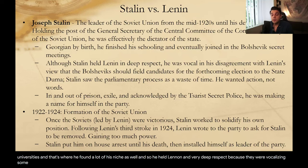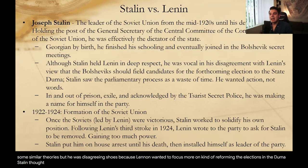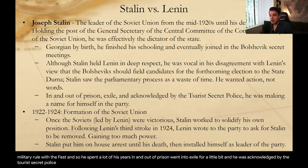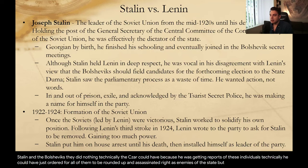He held Lenin in very deep respect because they were vocalizing similar theories, but he was disagreeing with Lenin on some issues. Lenin wanted to focus more on reforming the elections in the Duma, while Stalin thought the entire parliamentary system was a waste of time — he wanted action, not words. Very early on he wanted a more military rule with the fist. He spent a lot of his years in and out of prison, went into exile for a bit, and was acknowledged by the Tsarist secret police, making a name for himself in the party. The fact that the Tsar's secret police knew about Lenin and Stalin and the Bolsheviks for years but did nothing was a fatal mistake — technically he could have ordered all of them rounded up and assassinated as enemies of the state, but he did not work quickly enough.